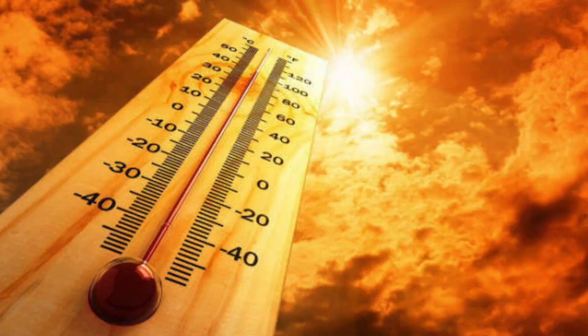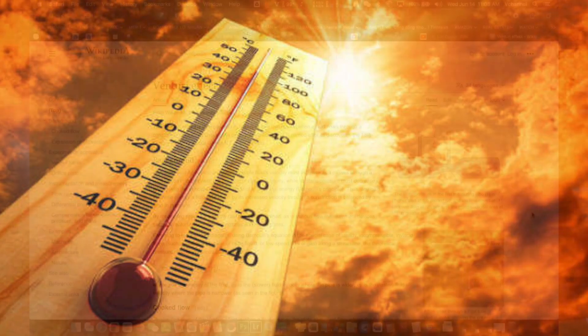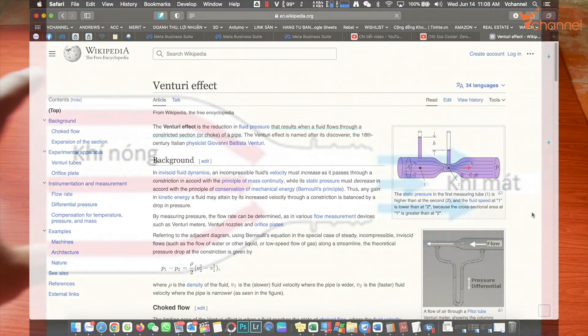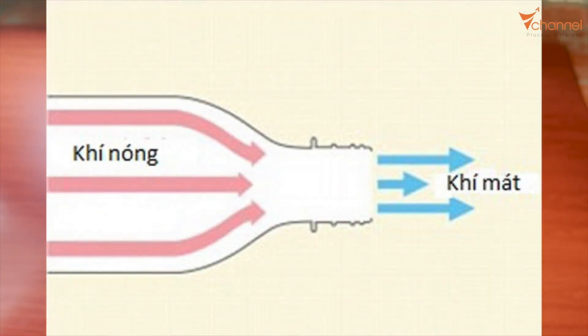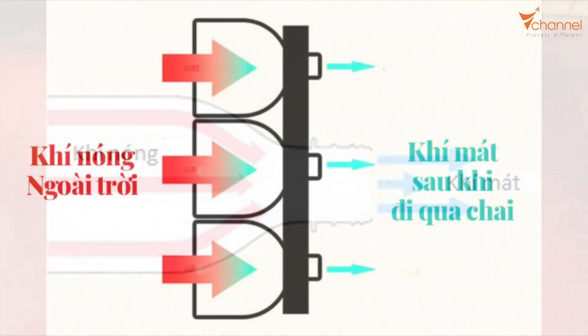Welcome back to V Channel. In the scorching heat of this year, we will have a quite interesting project: an air conditioner that doesn't use electricity. It's based on the Venturi effect. When air passes through a constriction like this, changing its pressure will cause the temperature to drop down.